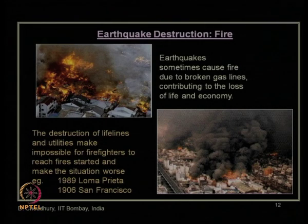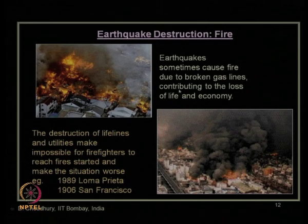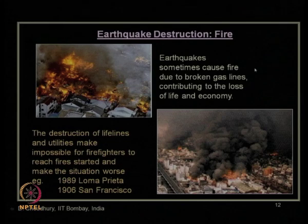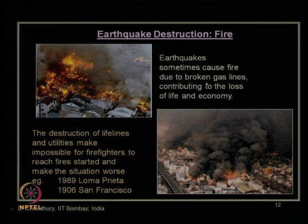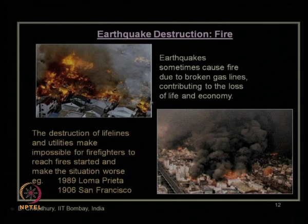We had also seen the secondary effect of earthquake destruction through fire. During an earthquake, the gas lines or pipelines carrying gas or oil, or even electrical lines, can get damaged or broken over distances of a few meters to several kilometers. Once these lifelines are damaged, there is a high probability that gases coming out from broken gas lines or disrupted electrical lines can easily ignite and cause fire across a huge locality after the earthquake.